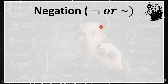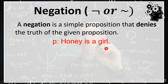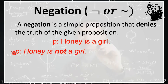The simplest logical operator is the negation operator, which is denoted by the negation symbol. A negation is a simple proposition that denies the truth of the given proposition. For example, we have proposition P: Honey is a girl. When we negate this proposition, we simply deny the truth, so we can say Honey is not a girl, which is denoted by the symbol not-P. When we negate, we insert 'not' into the given proposition.